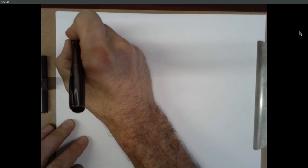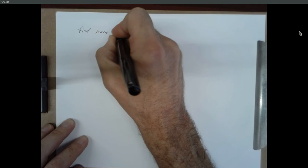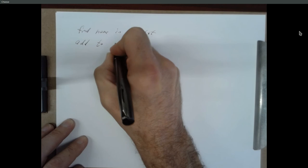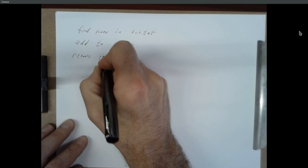I keep getting questions from people about a few aspects of manipulating the reservation file, so I want to pin that down once and for all. I'm getting questions about how to find a name in the reservation file, how to add to the reservation file, and how to remove a record from the reservation file.